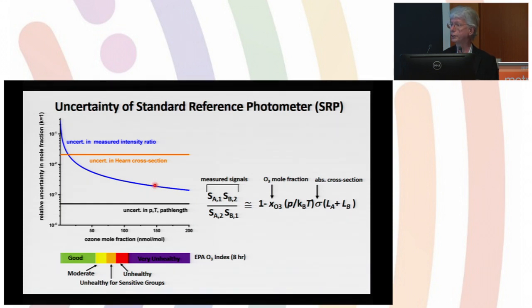The measurement can never be more accurate than that unless you reduce that uncertainty. The uncertainty in number density and path length is about a factor of 40 below the Hearn cross section, so the biggest tent pole to reduce from the point of view of uncertainty is the cross section.